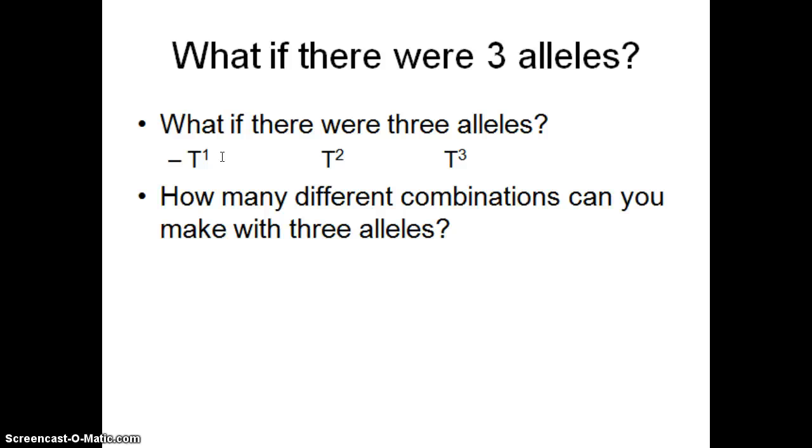So if there's three alleles, one of them is T prime or T1, the other one is T2, and the other one is T3. How many different combinations can you make with these alleles?